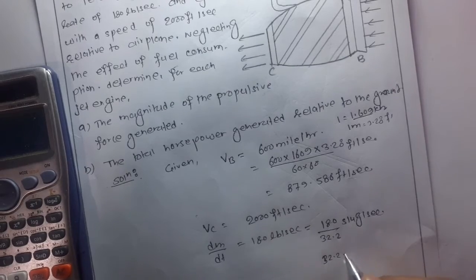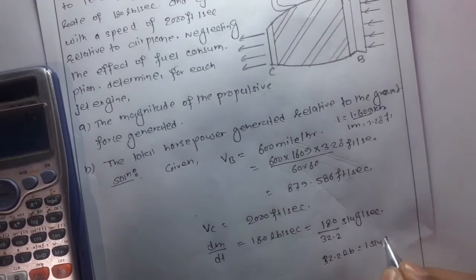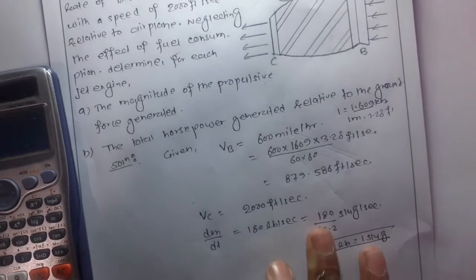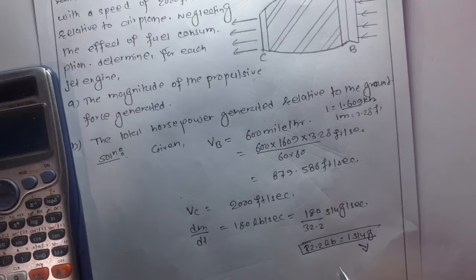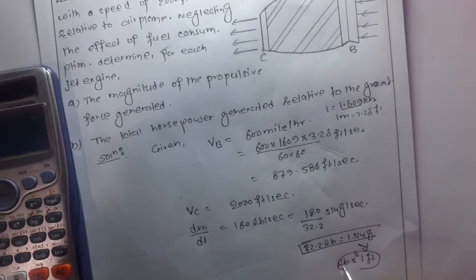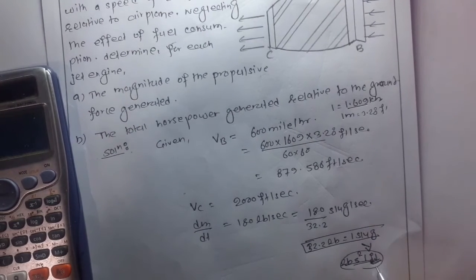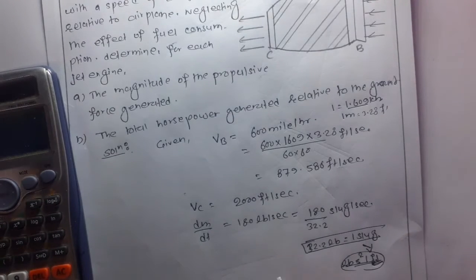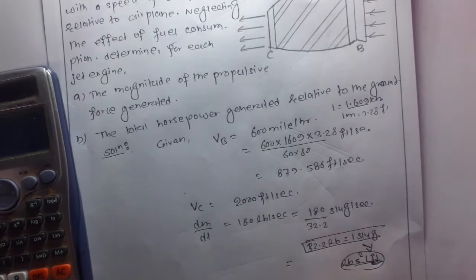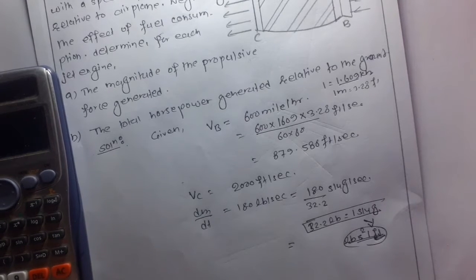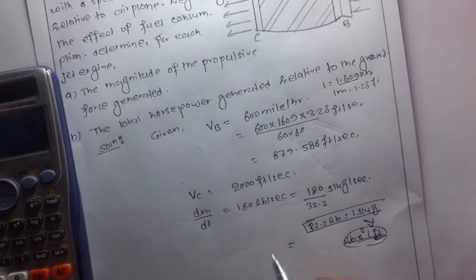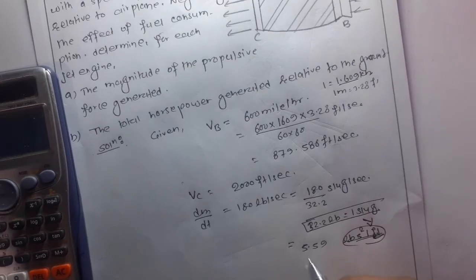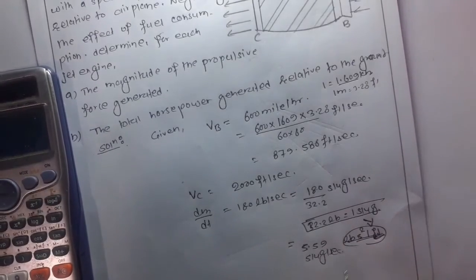32.2 lb is equal to 1 slug, so we simply change this dm/dt to slugs. We change lb per second to slug per second, so this is 180 divided by 32.2, which equals 5.59 slug per second.